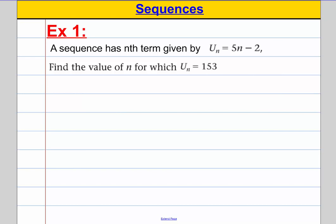Example 1, so copy this down. A sequence has nth term given by the formula Un is equal to 5n subtract 2, and it says find the value of n for which Un is equal to 153. So we have to find the term of the sequence, which number term of the sequence gives us this. So what we're going to do is we're going to make the nth term equal 153 and find the n that makes that happen.